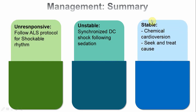The third category is the stable patient — awake, communicating, normal blood pressure, no ACS, no chest pain, normal GCS, no pulmonary edema. These patients can be treated with chemical cardioversion such as amiodarone or procainamide. In any case we need to identify and treat the underlying cause — for example, acute coronary syndrome or MI requires cath lab referral for catheterization and possible stenting.